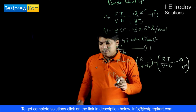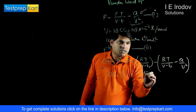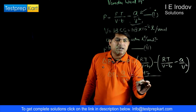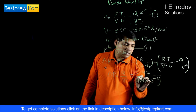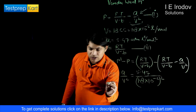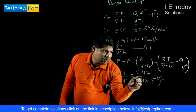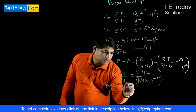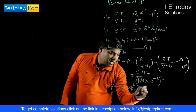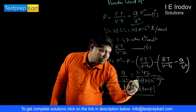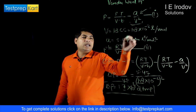Now substituting the values: a = 5.47, divided by V² where V = 1.8 × 10⁻² liters, giving (1.8 × 10⁻²)². Solving this, ΔP is approximately 1.7 × 10⁴ atmospheric pressure. This is the magnitude of the increase in pressure exerted by water on the vessel wall when intermolecular attraction force vanishes.